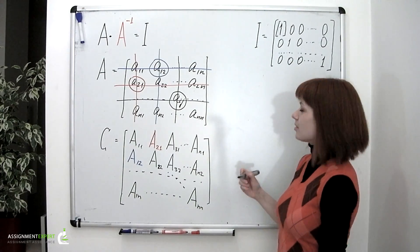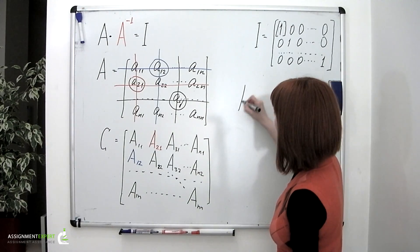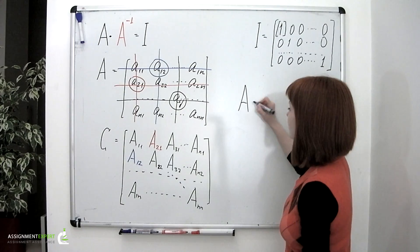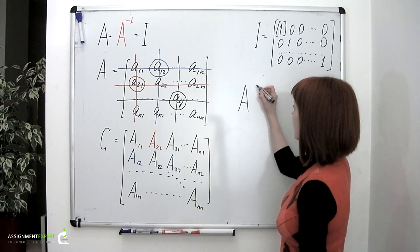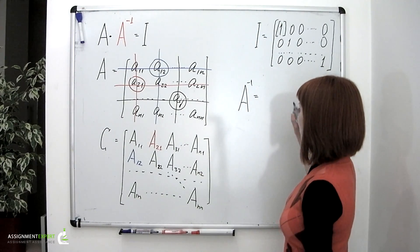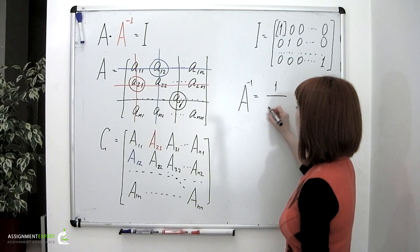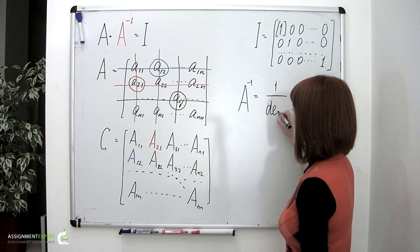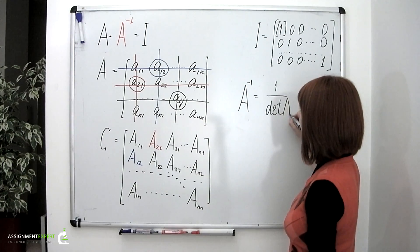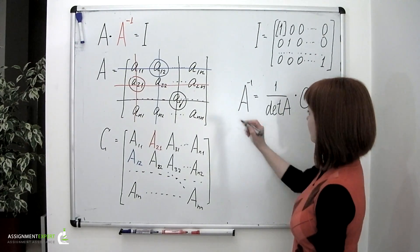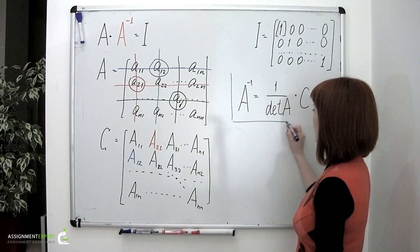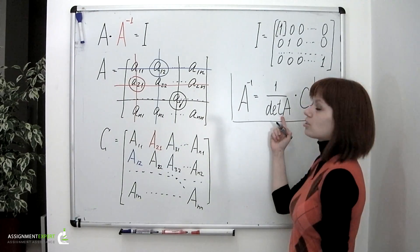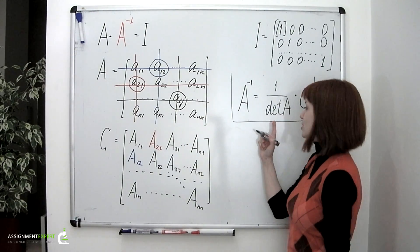So finally, the inverse matrix is found by the following formula: inverse A equals 1 divided by the determinant of the initial matrix multiplied by the adjugate matrix. And we should keep in mind that the determinant of the initial matrix mustn't be equal to 0.